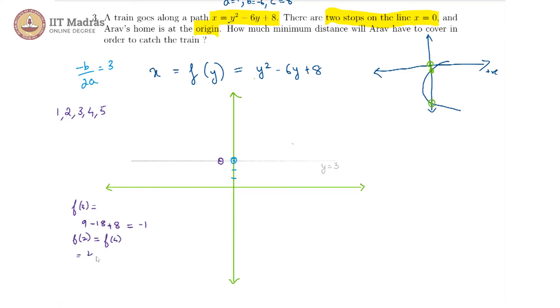If I just substitute 2 I will get 4 minus 12 plus 8 which is equal to 0. Okay that is good.